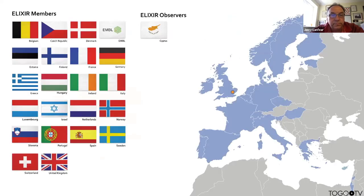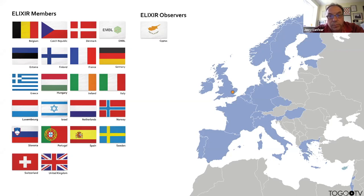We are a member state organisation. We currently have 23 members — Cyprus joined recently as an observer and is on track to become a full member. We have 22 full members including the EMBL-EBI. That little orange spot on the map is the location of the ELIXIR hub where I'm based, at the Cambridge site at Hinxton. We have about 25 staff at the hub and we try to coordinate activity across all of the member states.